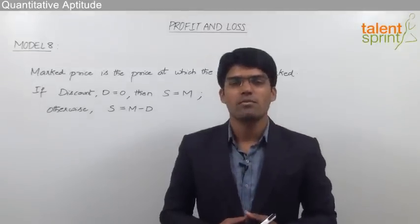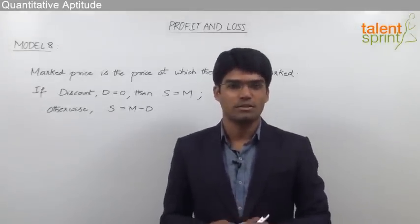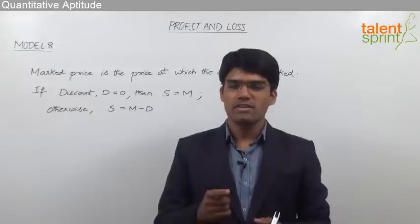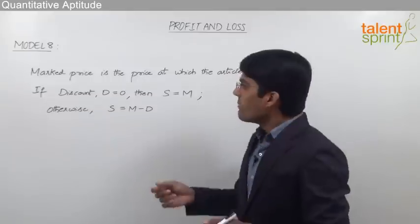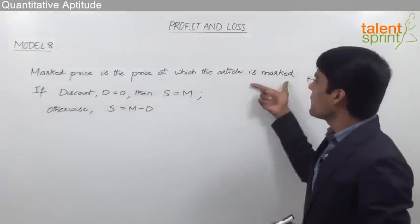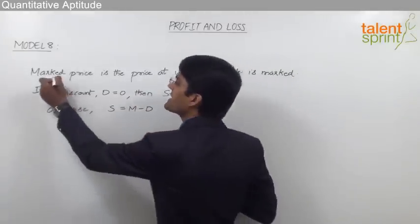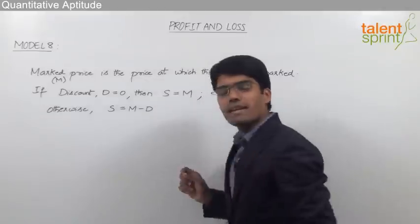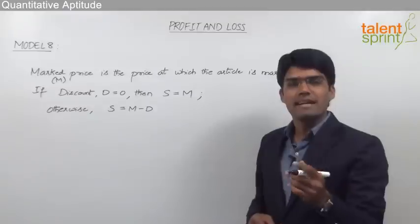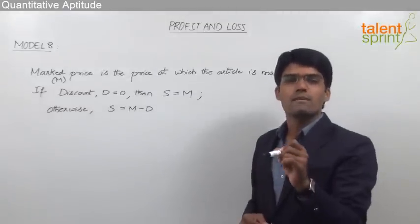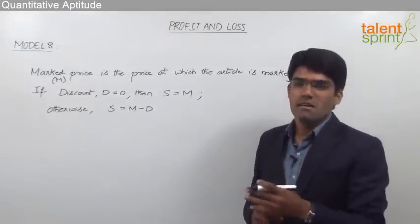Let us now take the next model from profit and loss, which is based on the concept of discount. To understand this concept, we first need to learn what is marked price. Marked price is the price at which the article is marked, generally denoted as M. We find that on many articles there is a label or a value written — that value is known as marked price.